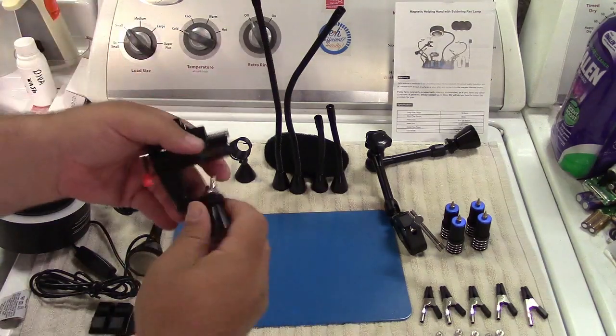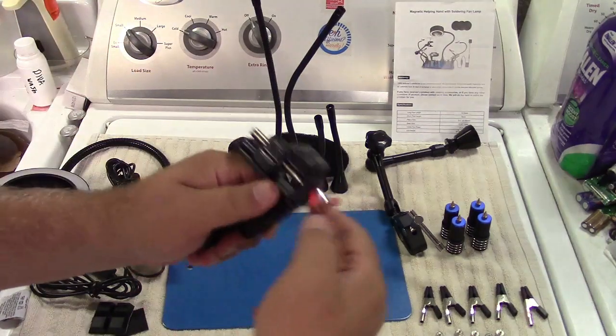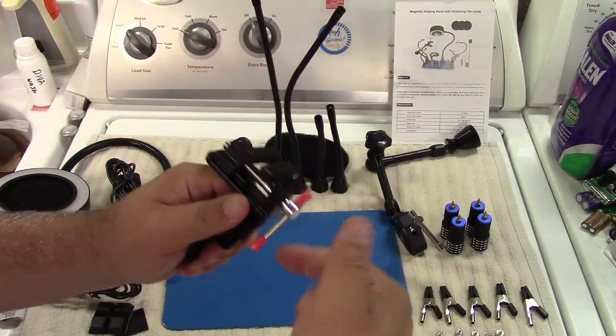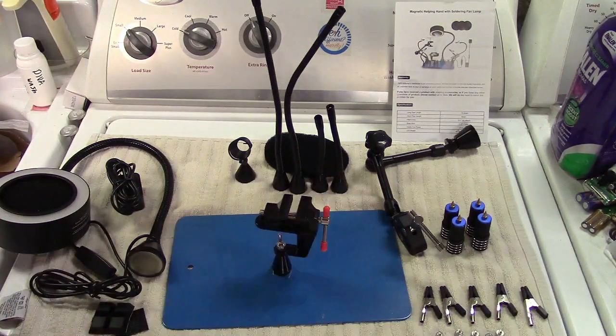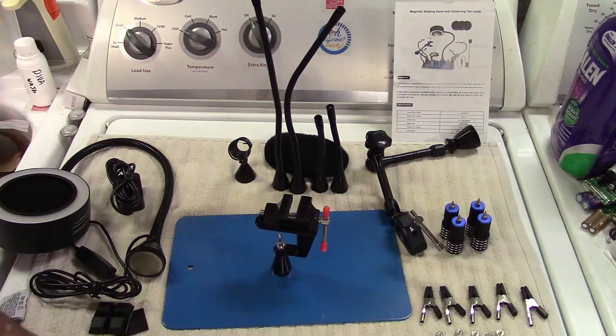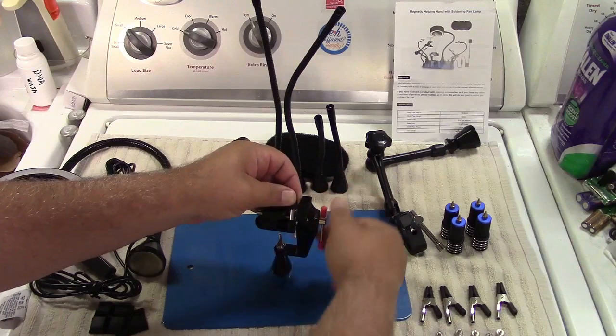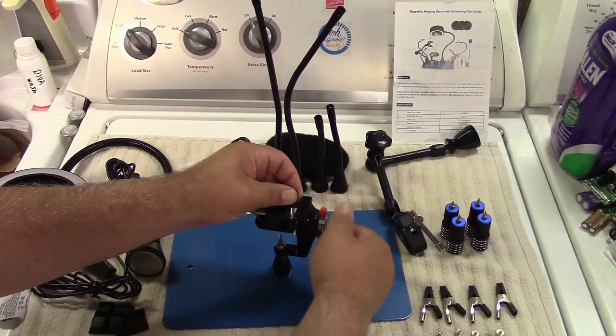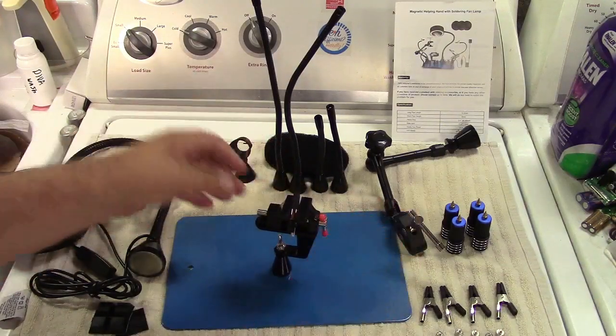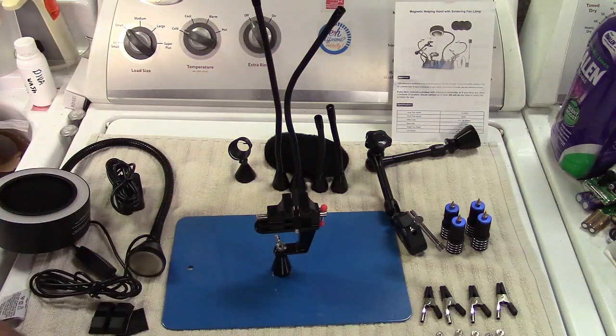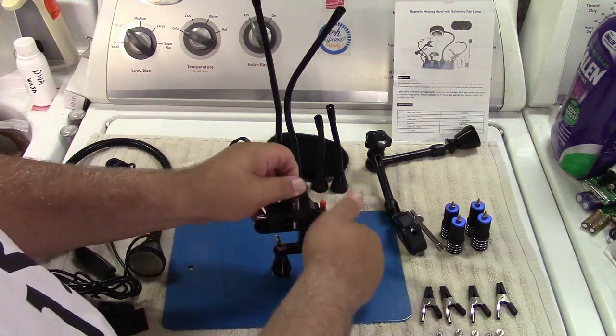So you get a vise over here. You can open that up. Stick that on. Let me get something to put in there. In fact, we'll just use the alligator clip. And there you go. It'll hold it, and everything is right there for you just like that.